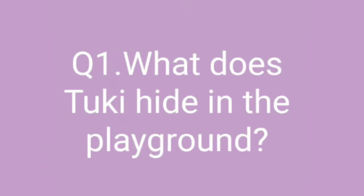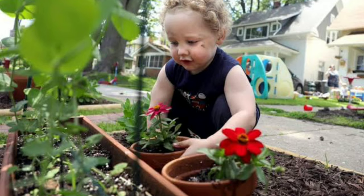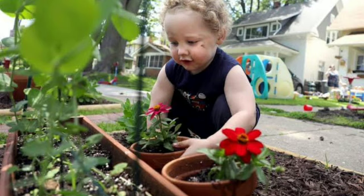Question number one: what does Tuki hide in the playground? Answer: Tuki hides capital letters in the playground. As we started in the lesson, the very first thing that happens in the story — Tuki hides some capital letters in the playground before leaving for vacations, thinking she will find them when she comes back to school.